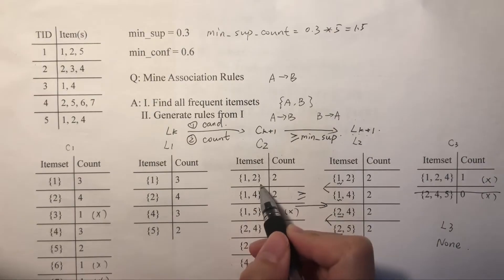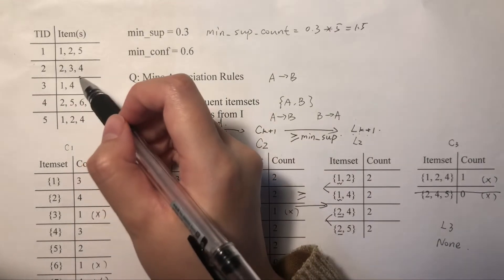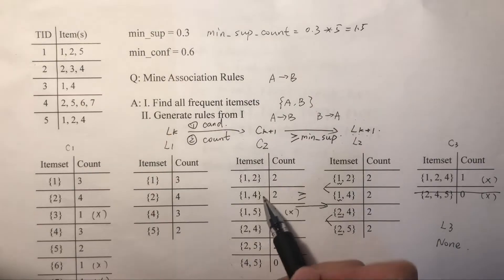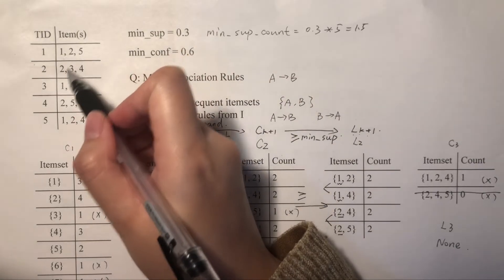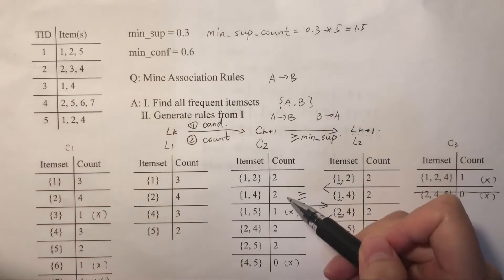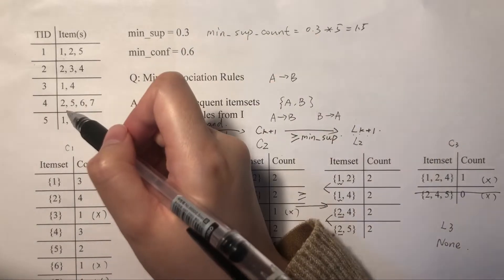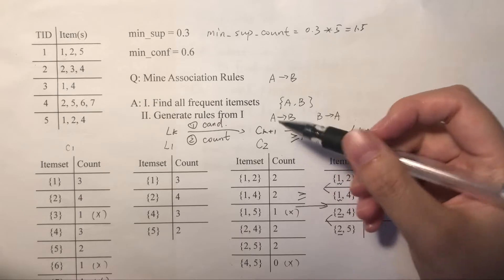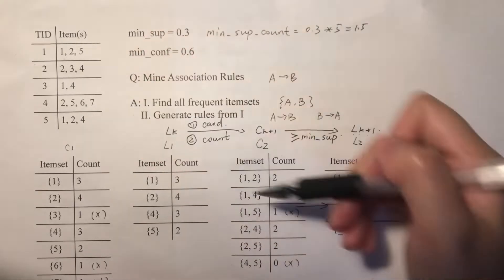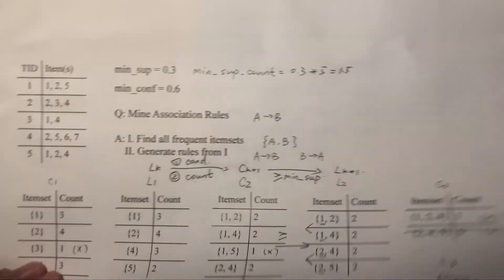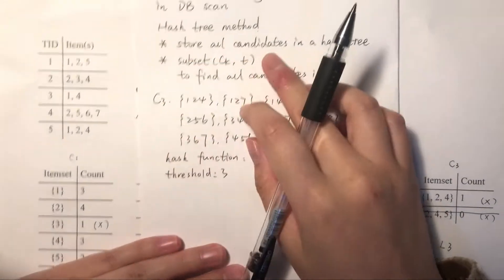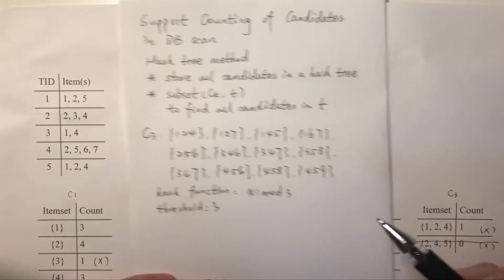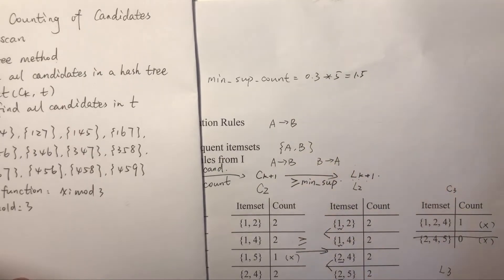For this item set {1,2}, we will go to the original database and check. It occurs 2 times. And for {1,4}, we go back to the database again and check — 1 and 2 times. So for each candidate, we need to go to the database and scan it once. You can imagine it would be really time-consuming if we have thousands of candidates and thousands of transactions. So in today's video, I'm going to talk about the hash tree method to do the support counting. In this way, we only need to scan the database once per level for all candidates.